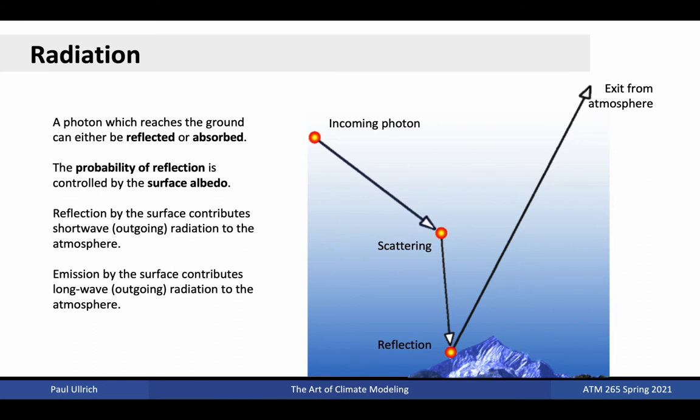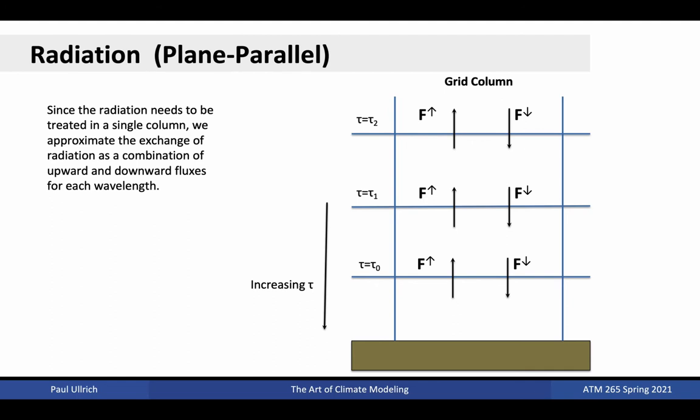When the photon reaches the surface of the planet, its probability of reflection is computed based on the albedo of the surface, which is a function of the surface type. Reflection of short-wave radiation by the surface contributes to outgoing short-wave radiation, while emission of radiation from the surface contributes to outgoing long-wave radiation. Radiation parametrization calculations are generally performed within each grid column separately. This simplifies matters since we do not need to account for lateral exchange of photons. Then, for each wavelength, we only need to compute the radiative flux between each discrete layer of the grid. Given that they are strongly connected, upward and downward fluxes are solved as a unified system.